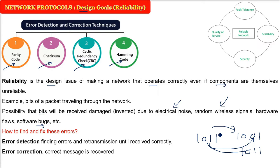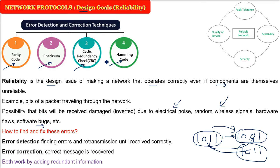Error correction involves both error detection and correction. In all these methods, we have to add certain redundant information - actual data along with extra bits - so those bits can be used for finding errors. For example, checksum is the XOR of all the bits and can be used at the destination end.